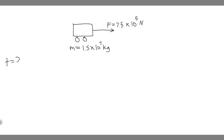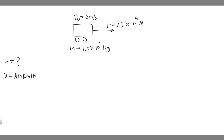So how do we do this? We're given the force and mass, and we're also given that the train starts from rest, meaning its initial velocity is 0 meters per second. We want to find how long it takes to get to 80 kilometers per hour. We're solving for t, and we have v and v sub 0, so we're going to use kinematics to solve this.